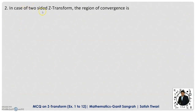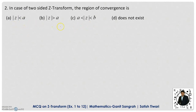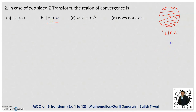Next question: In case of the two-sided Z-transform, the region of convergence is — we have four options: |Z| < A, |Z| > A, and |Z| lies between A and B. Consider a circle with radius A. |Z| < A means we consider the interior part of this circle. |Z| > A means we consider the outer part of the circle.